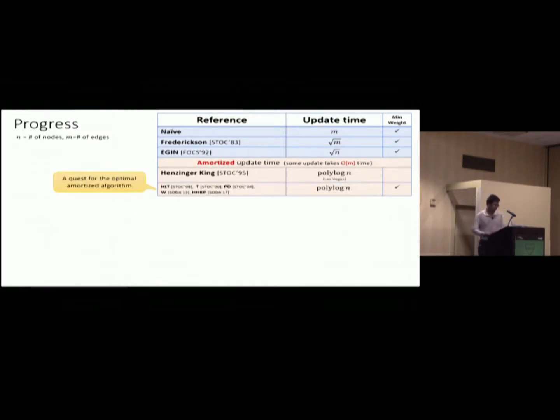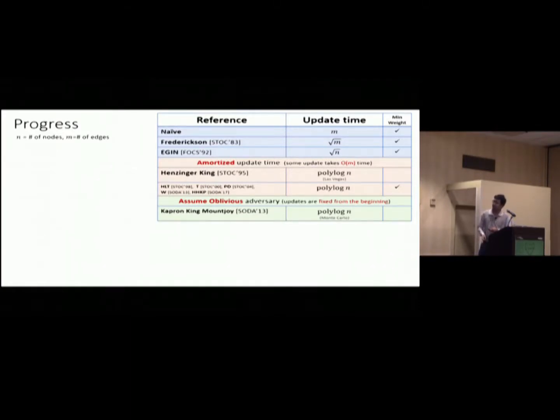So this actually starts the quest of the optimal amortized algorithm. And people have been working on it ever since, until like this year's SODA as well. And this is really tight. And it's a really cool result, many of them. But if you talk about worst case update time, not amortized, then there is a cool result by Kapron, King, and Mountjoy. They managed to get polylog update time. But there is another catch. That is, this assumes oblivious adversary. What do I mean by that? I mean that, suppose you think you are a user, you want to use this data structure, you need to fix all the sequence of your update from the beginning. And give this sequence to the data structure.